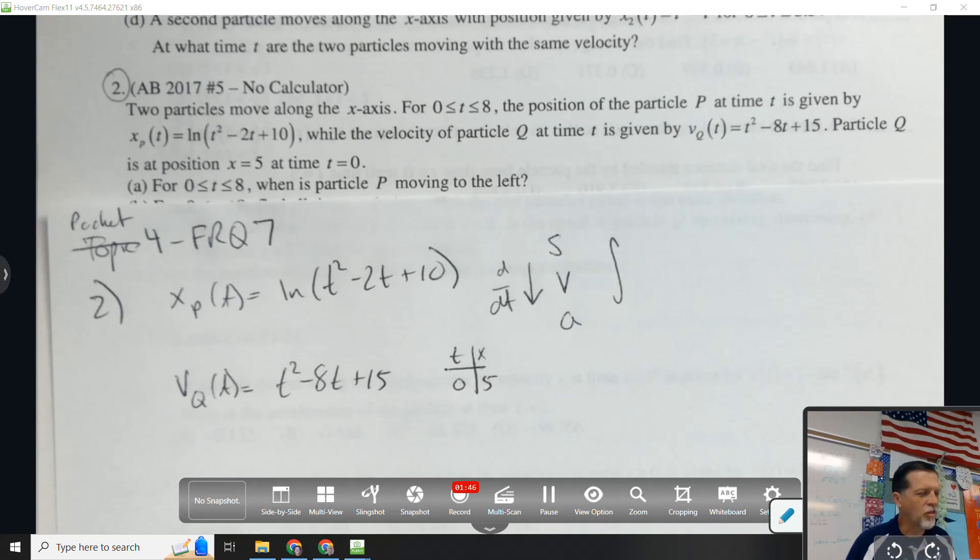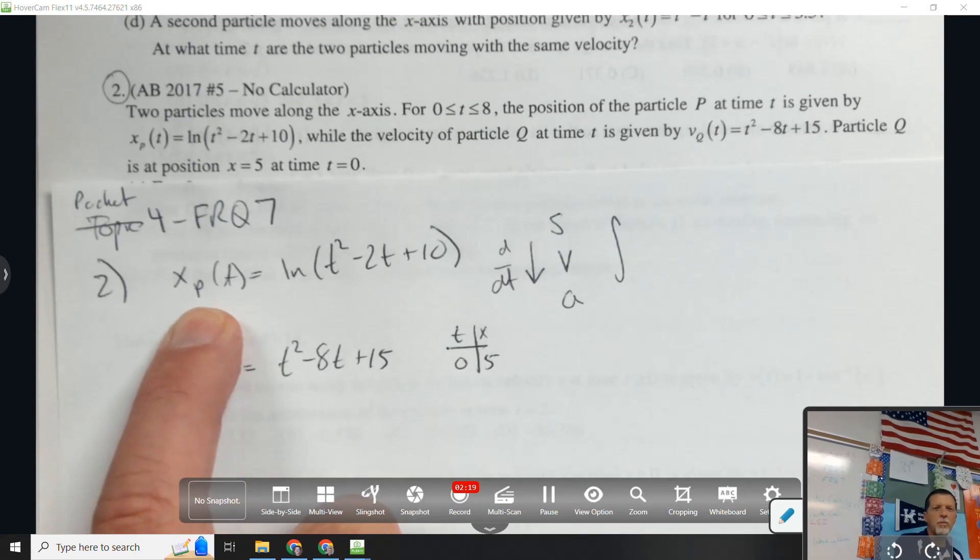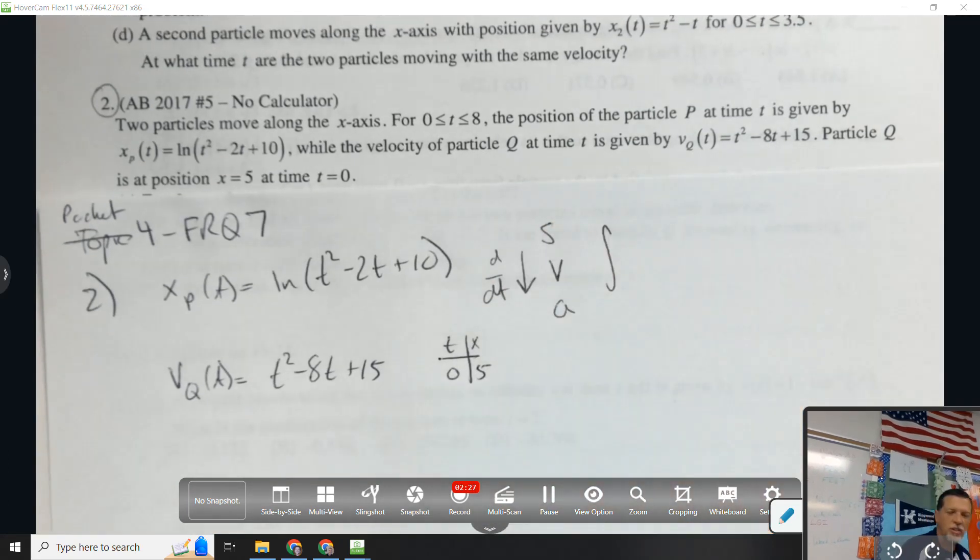So, maybe what do you notice first before we even read a question? What about this information that they gave us? Two particles. They gave us different stuff. They gave me the position for P and the velocity for Q. So I'm certain they're going to want me to be moving up and down this position, velocity, acceleration train here.